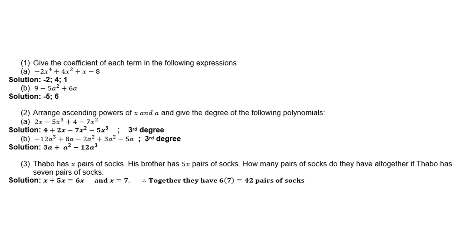Number 3: Tabo has x pairs of socks. His brother has 5x pairs of socks. How many pairs of socks do they have altogether if Tabo has 7 pairs of socks? Solution is x + 5x = 6x, so therefore x = 7. Together, they have 6 × 7 = 42 pairs of socks.